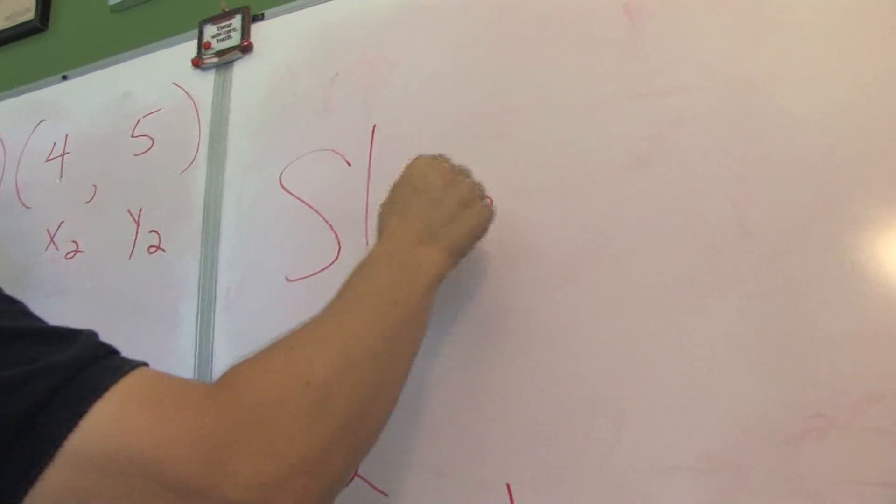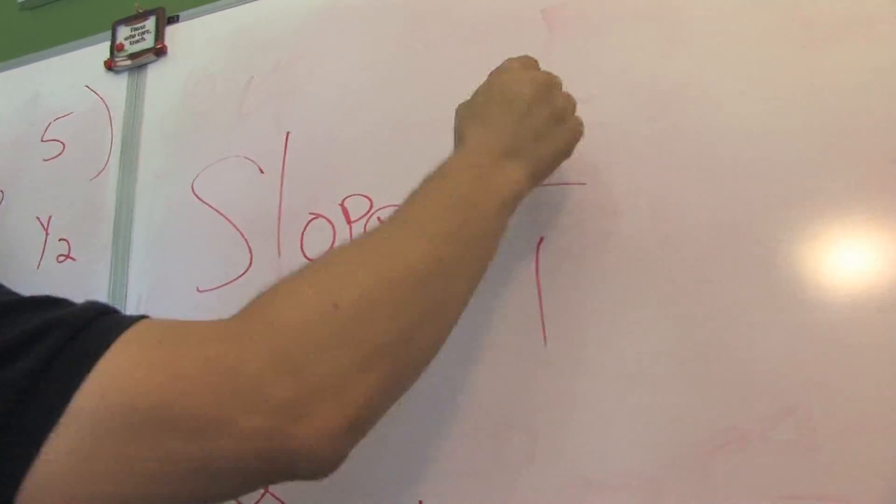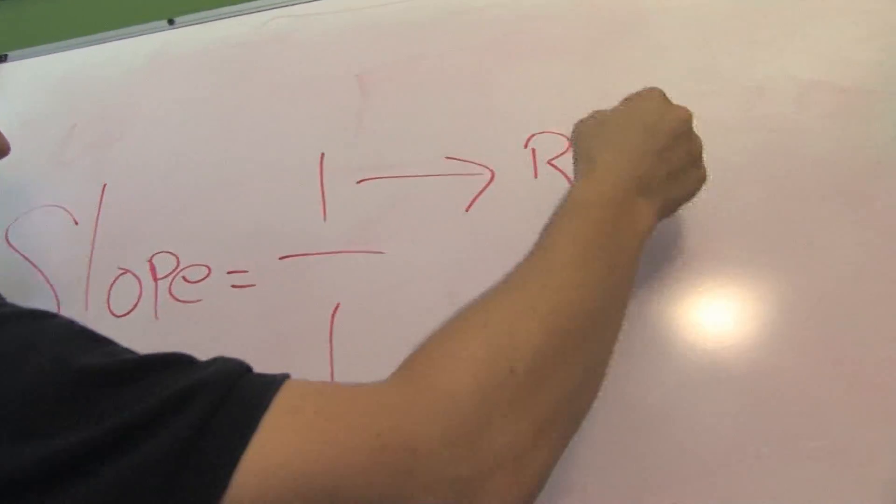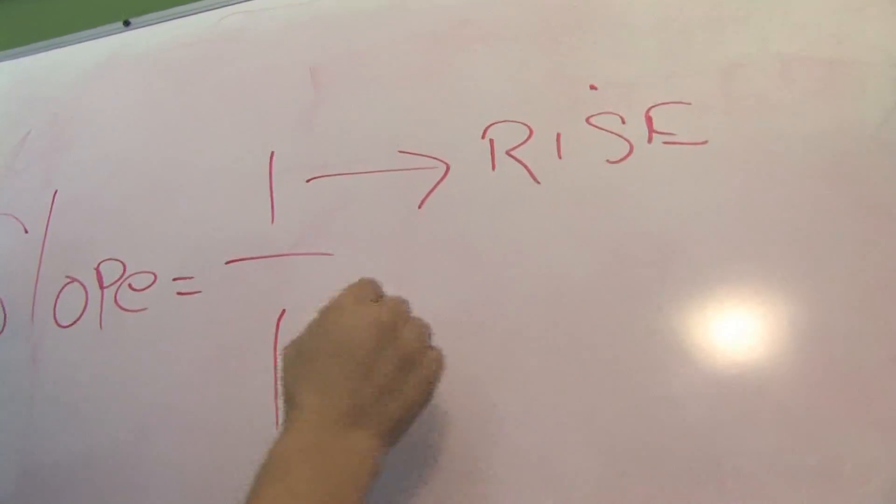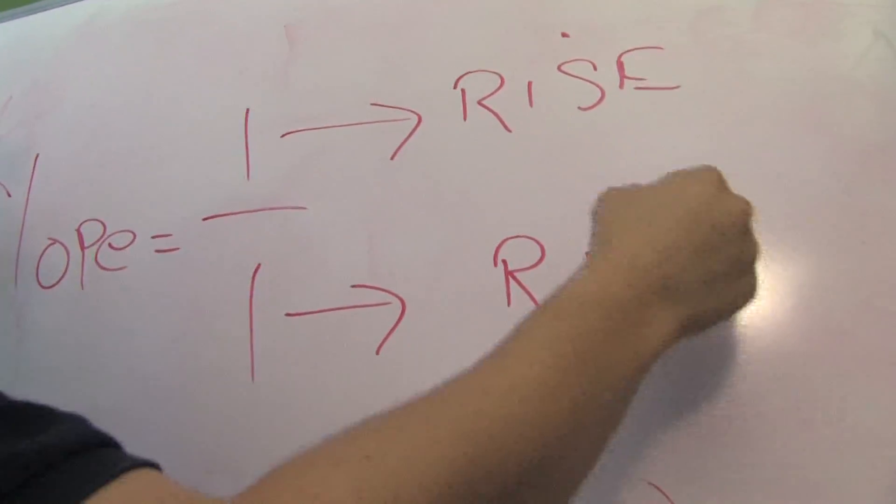Slope is going to be 1 over 1. This is going to be your rise and this is going to be your run.